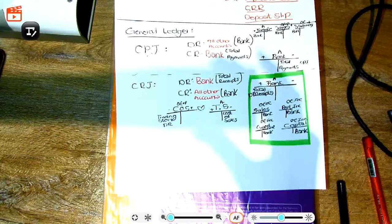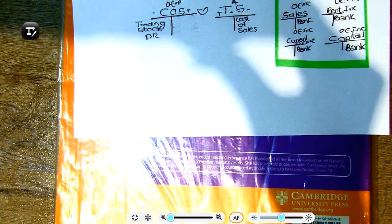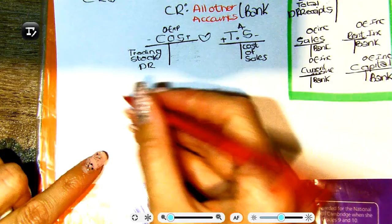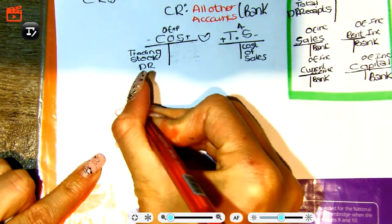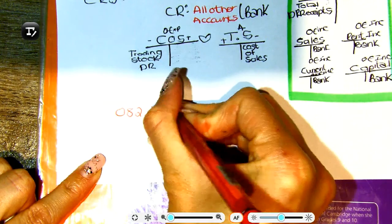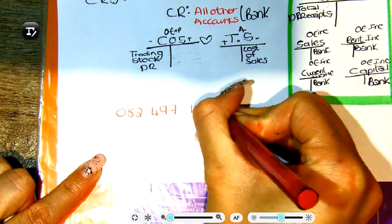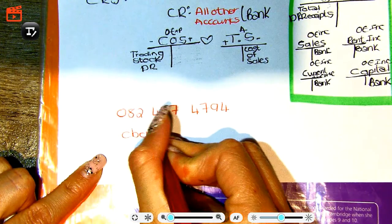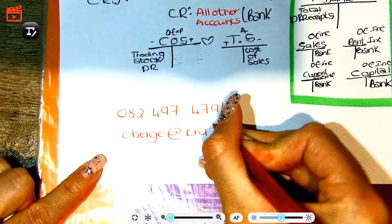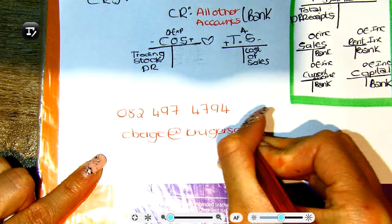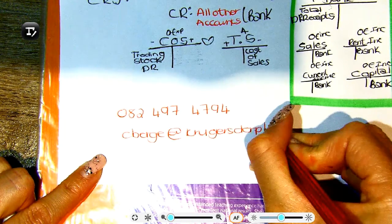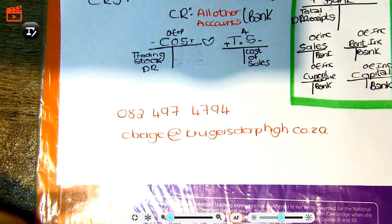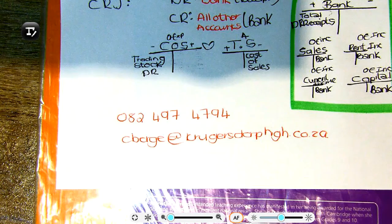I just wanted to write this down for you guys. If you need to get hold of me — I know some of you don't necessarily have my number — my cell phone number is 082 497 4794. You can also email me at cberj at krugersdorpi dot co dot za.